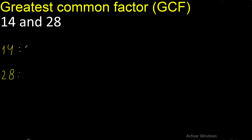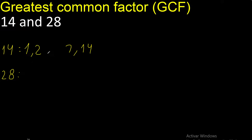Factors. Always start with 1. 14 divided by 1 is 14. Divided by 2 is 7. 14 cannot be divided by 3, cannot be divided by 4, cannot be divided by 5, cannot be divided by 6. Next, 7 — 7 is here. Factors.